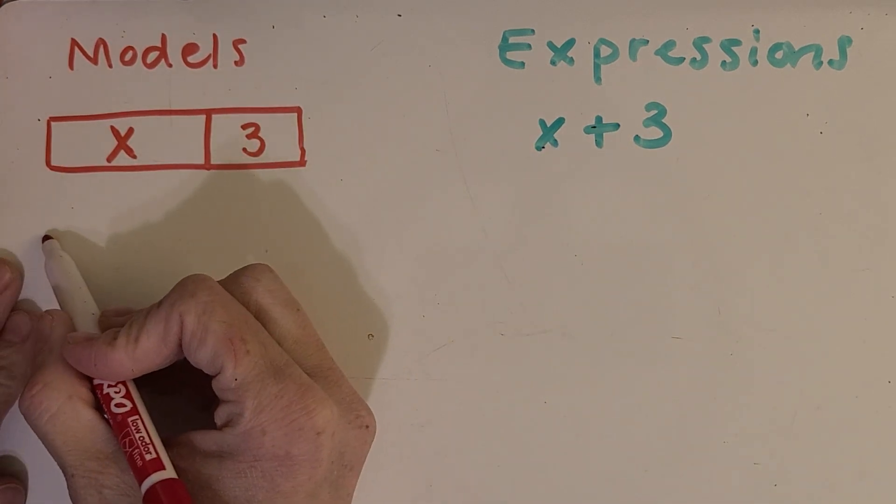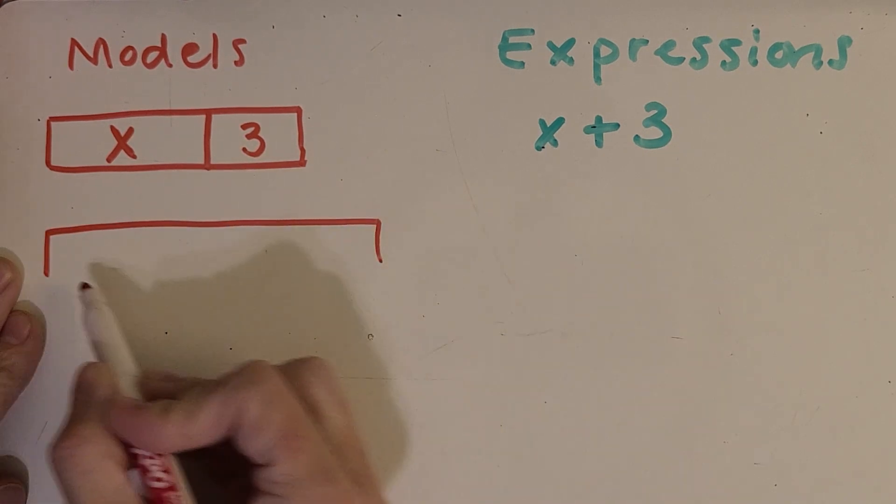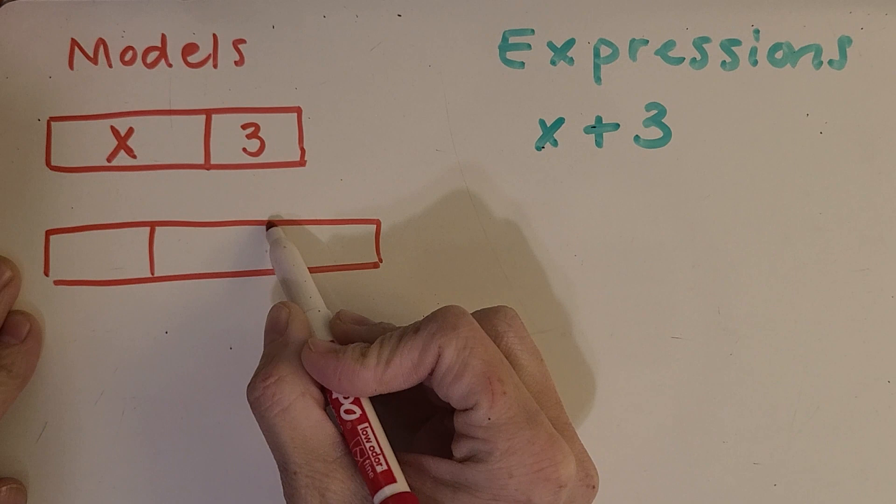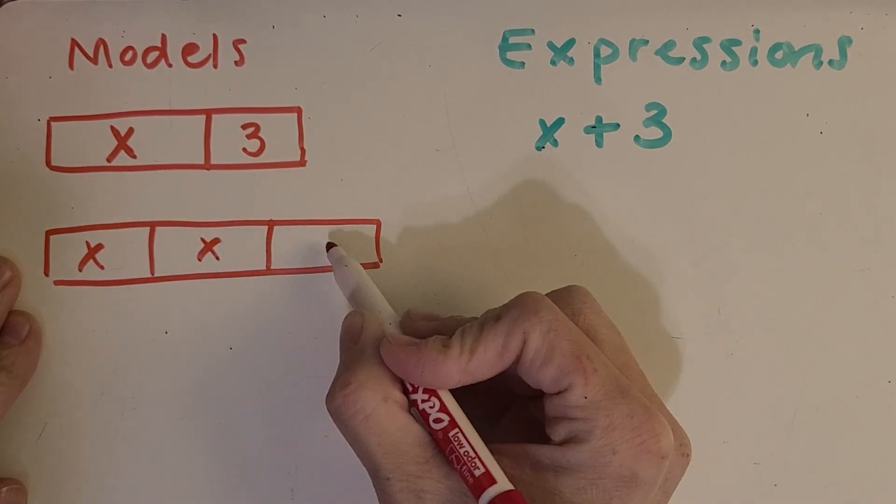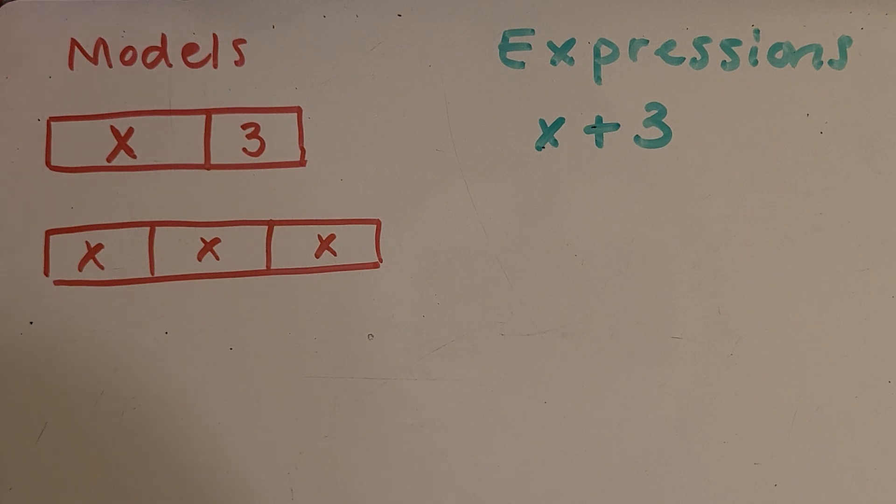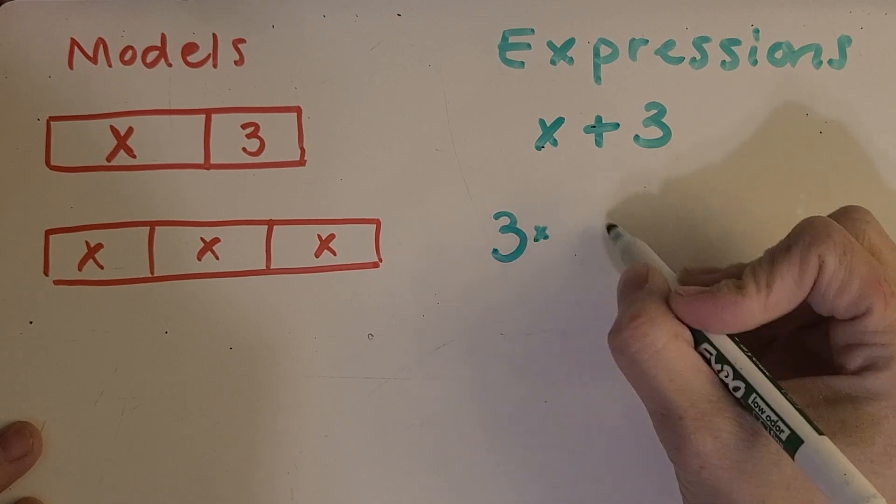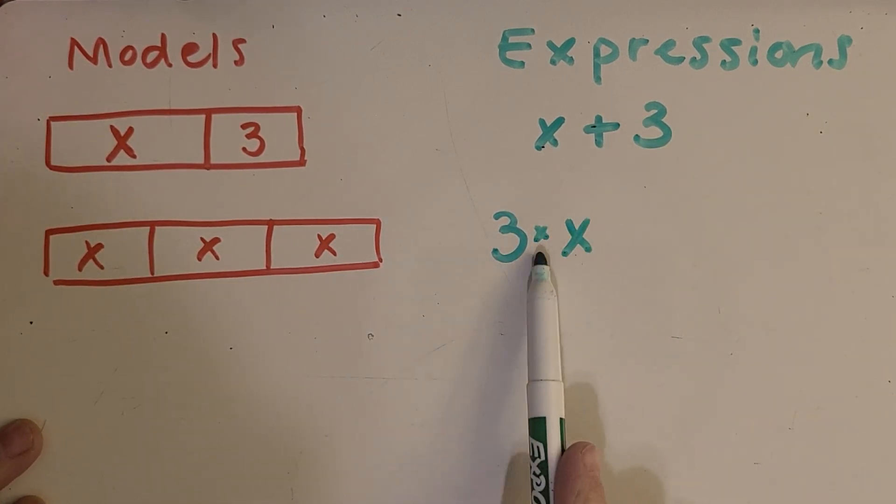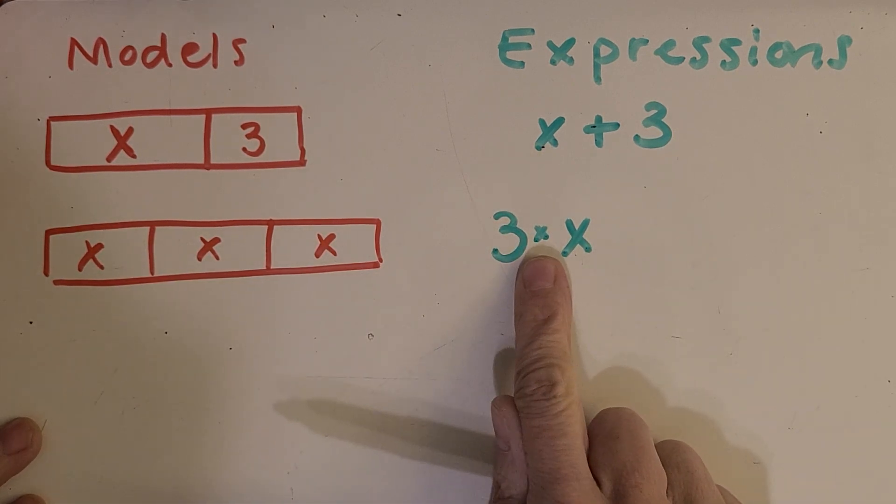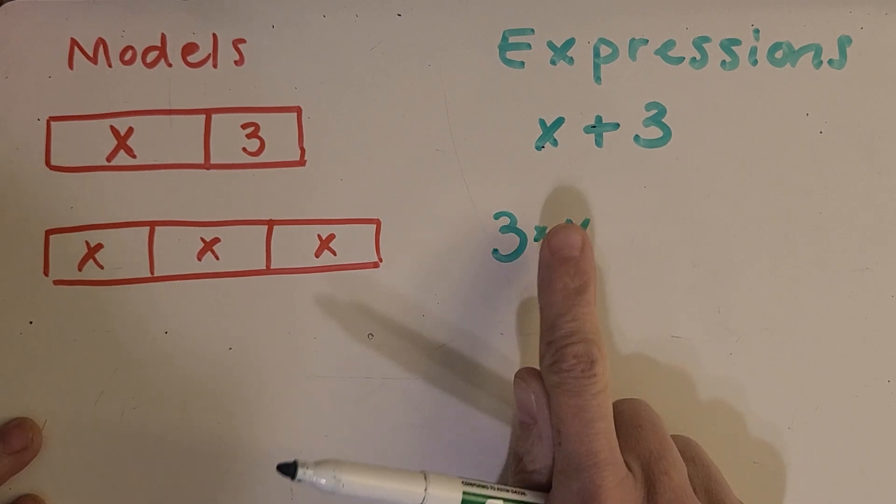Now I've got another model for you. We'll see if we can figure out what operation is going on. What do you see there? A lot of you are probably thinking, well, there's three of the unknown amounts, so that makes me think of three times X. And you'll see right there that that looks a little awkward, right? Because we're using the letter X as our unknown amount, we don't want to use the multiplication symbol. We want to pick something else.